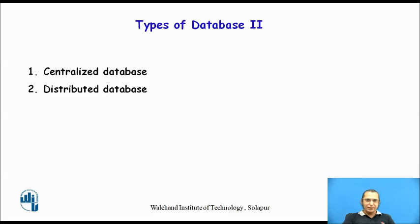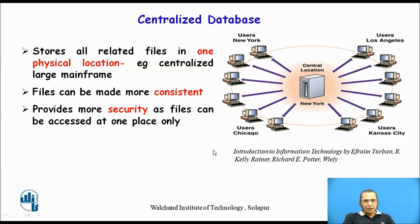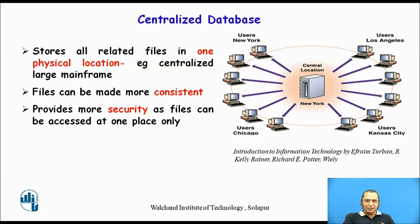Let us understand the difference between the centralized database and the distributed database. In case of centralized database, all related files are stored in one physical location. For example, there is a centralized large mainframe computer where all data files are stored. The advantage of centralized database is that the files are more consistent as everything is located in a single location. Secondly, security can be provided at one single point — since providing security is costly, having everything at one location makes it easier.